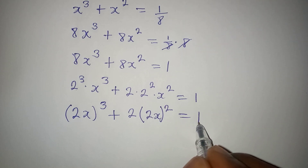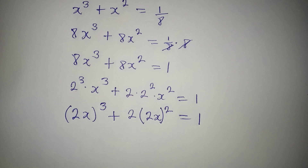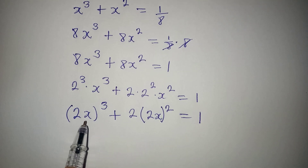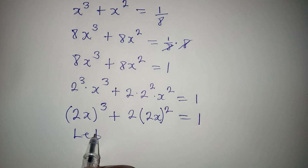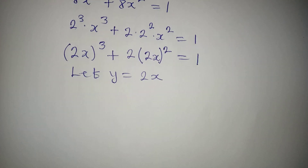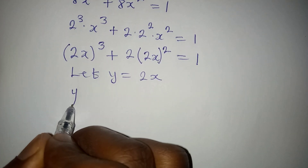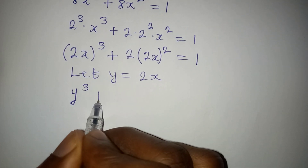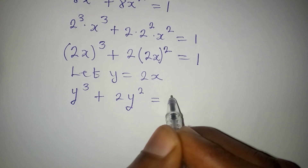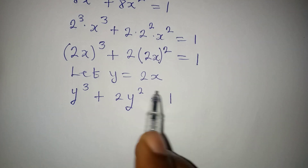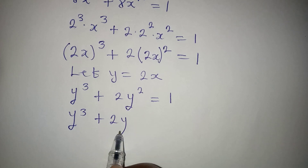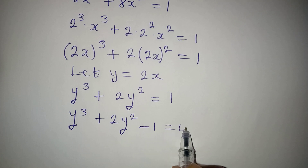You can see that 2x appears in both terms, so we can replace it with a letter. Let y equal 2x. This gives us y³ plus 2y² equals 1, which rearranges to y³ plus 2y² minus 1 equals 0.